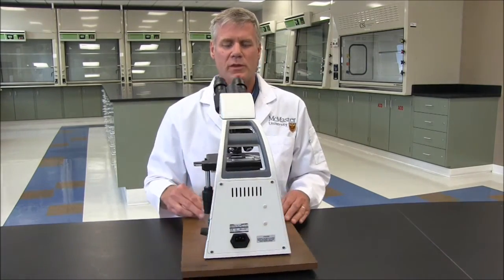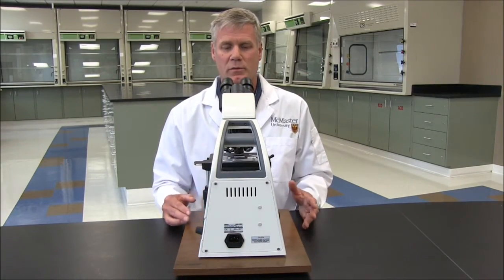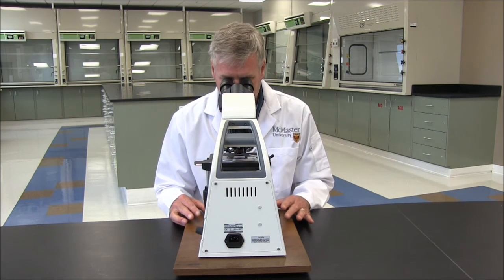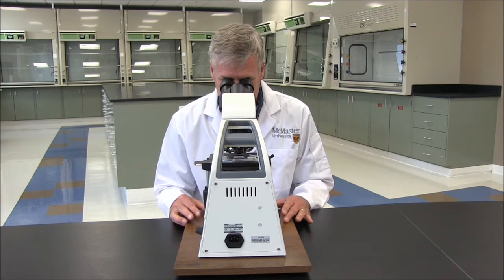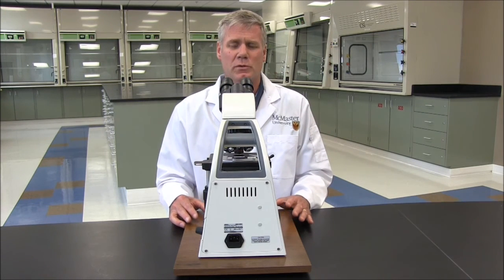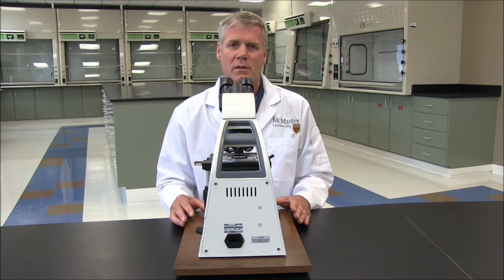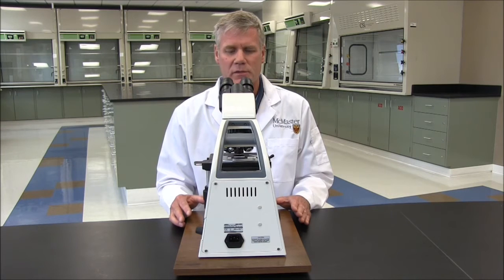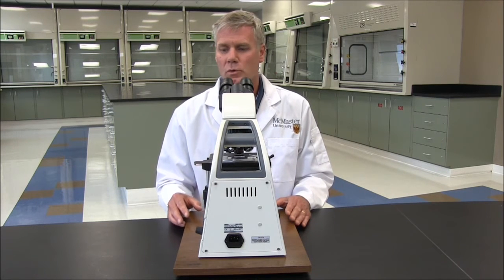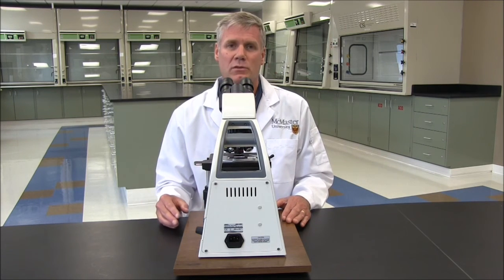When you first sit down at the microscope bench, you want to make sure that you adjust your seat height for comfortable viewing. Ideally, your head should come forward and both eyes rest on the eyepieces comfortably without moving your shoulders up or down. You could be sitting at the microscope for a while looking at different specimens, taking notes, or drawing objects that you see. So make sure that you're comfortable.